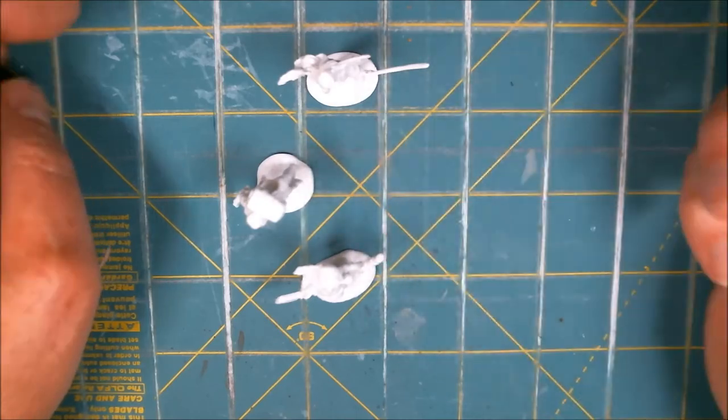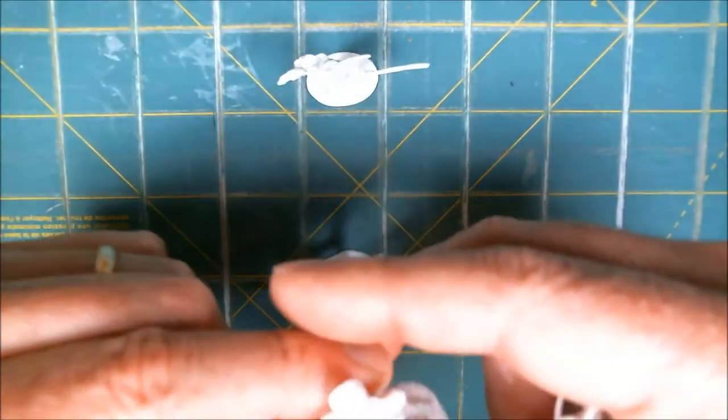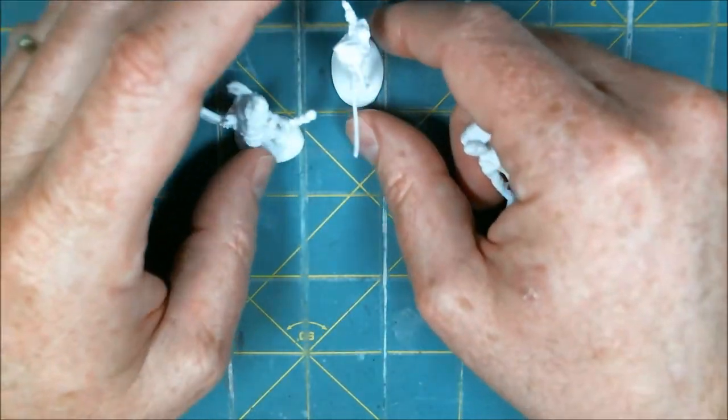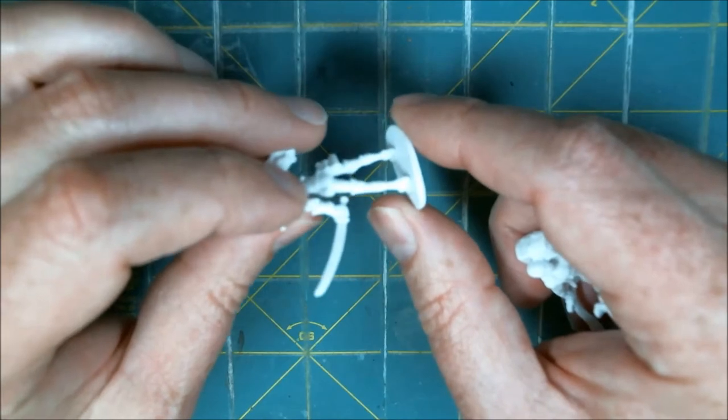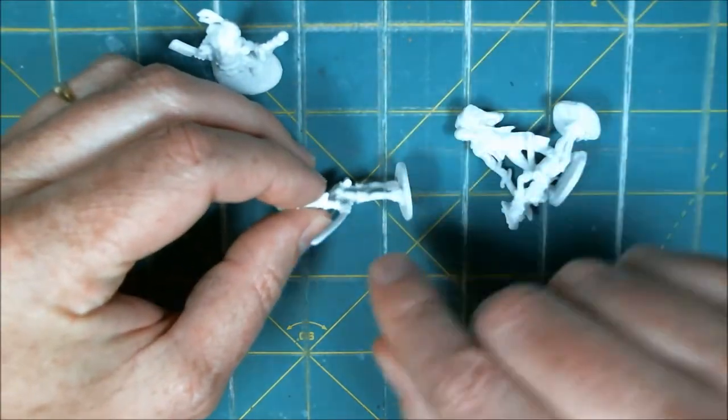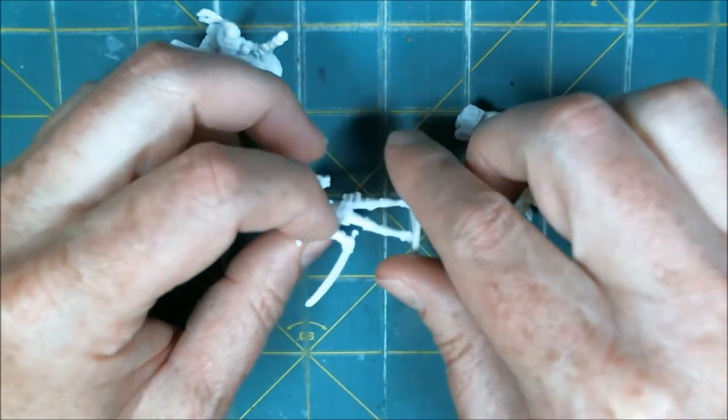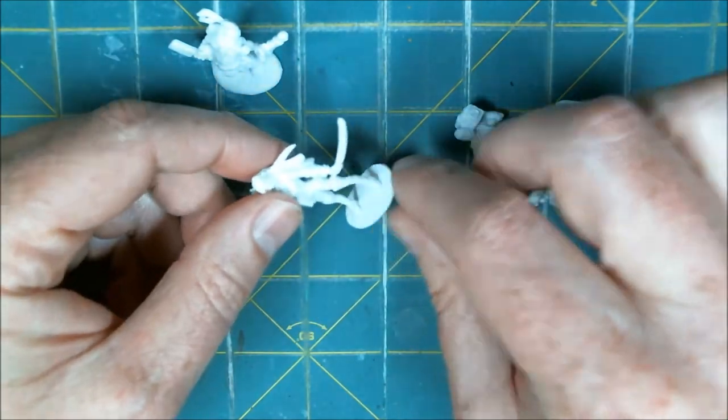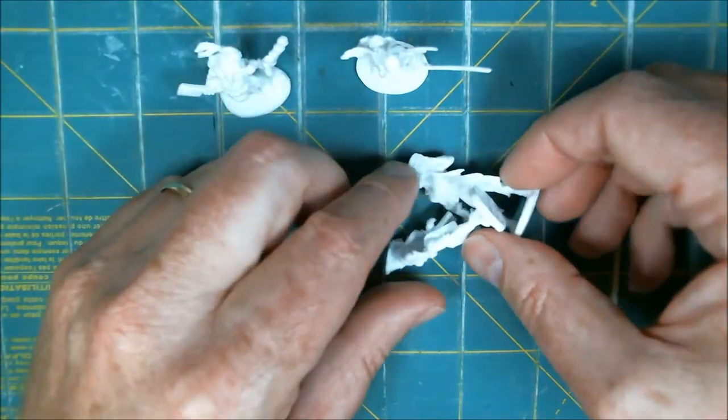But anyway, so boiling him, her, him, and these two can be as is. So the next step after this, if you can see, there's some pretty nasty mold lines. And I've actually never cleaned off the mold lines of bones figures before. So I might want to pick something easier to work with.